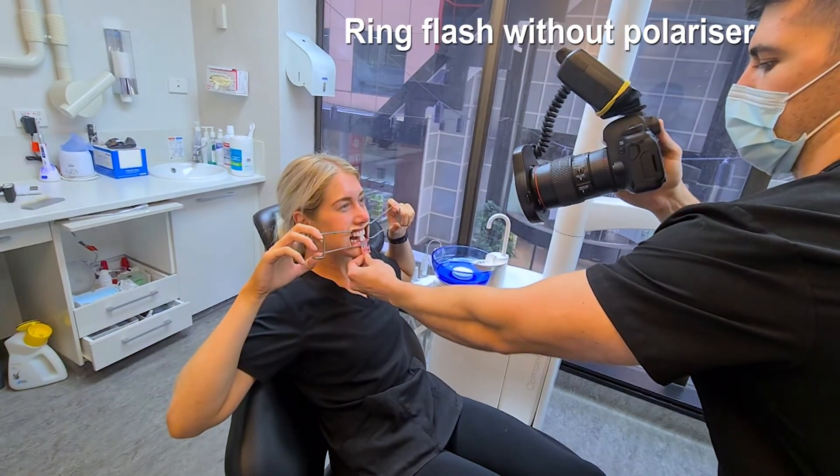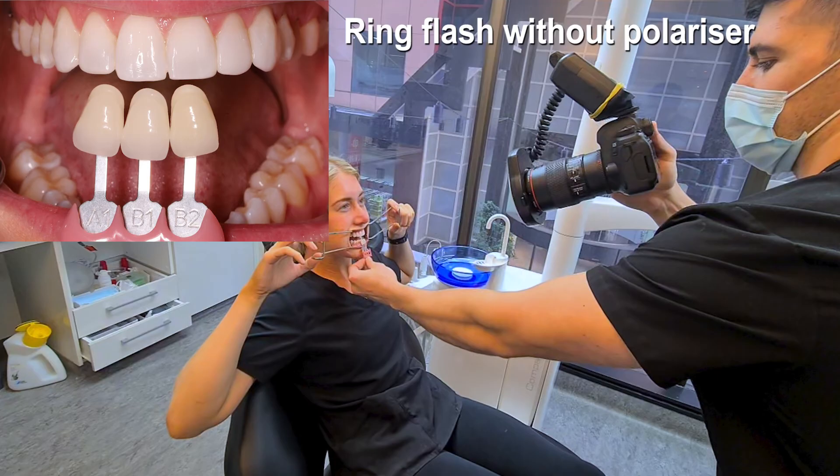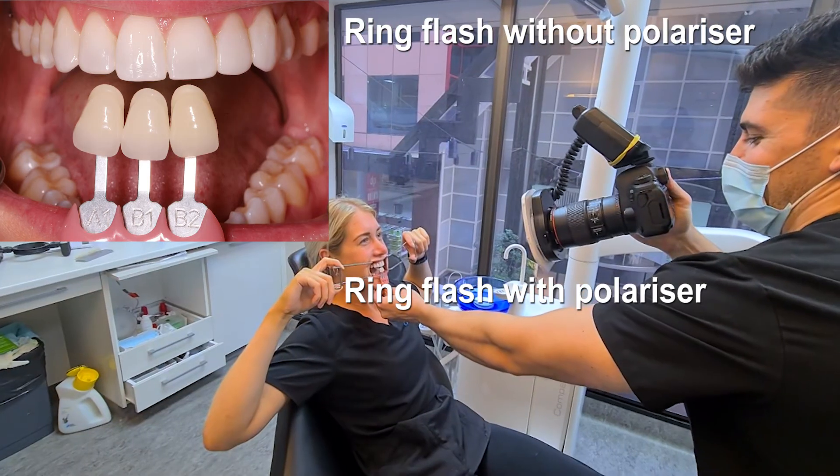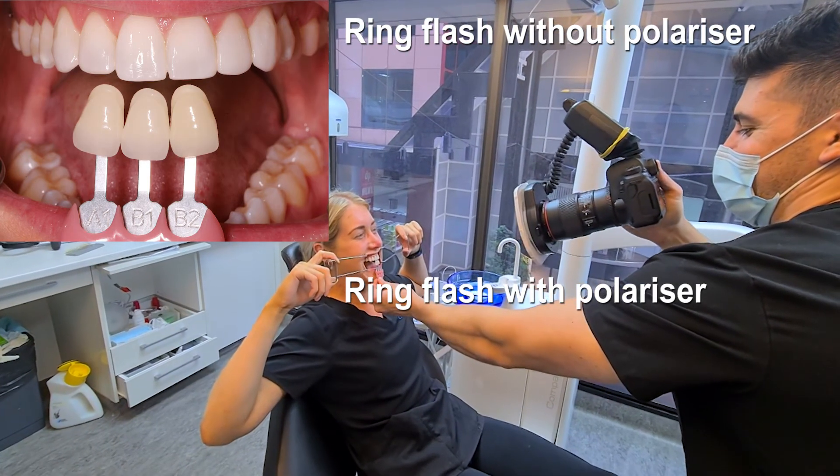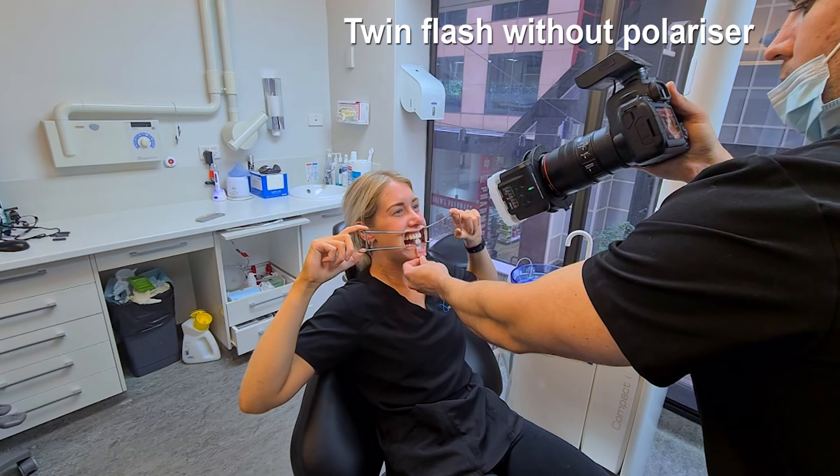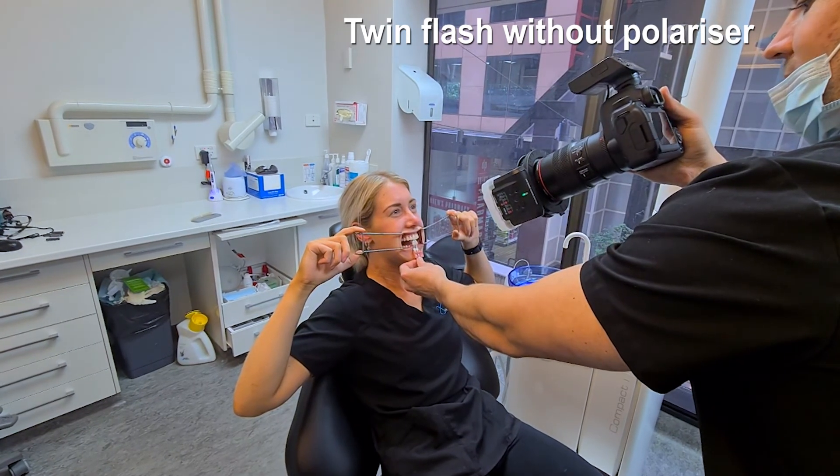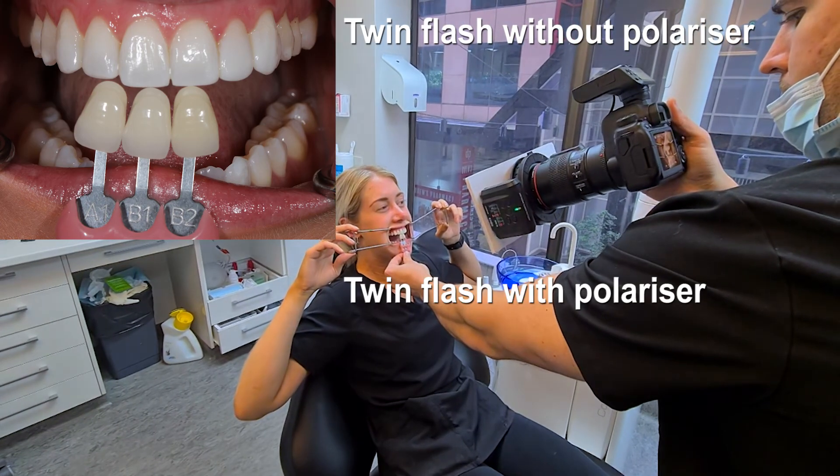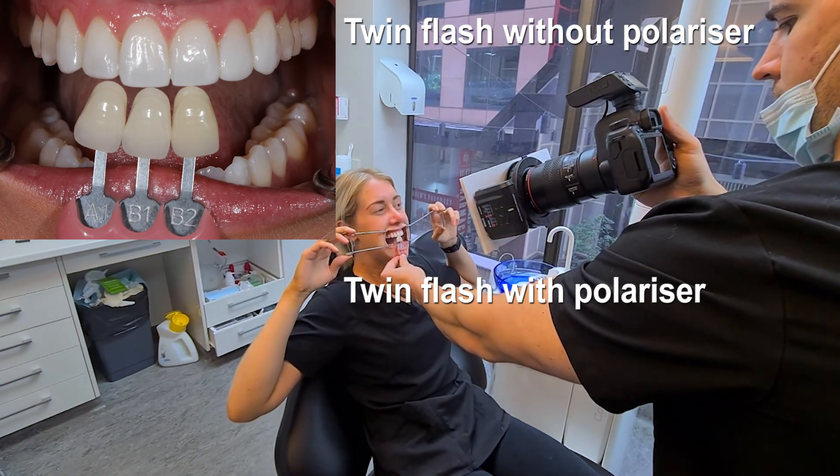So this is the ring flash without using a polarizer and it results in this image. And then when we use the ring flash with the polarizer this is the image that we get. Now we're going to be using the twin flash without the polarizer result in this image. And then as a comparison this is when we're using the twin flash with the polarizer.